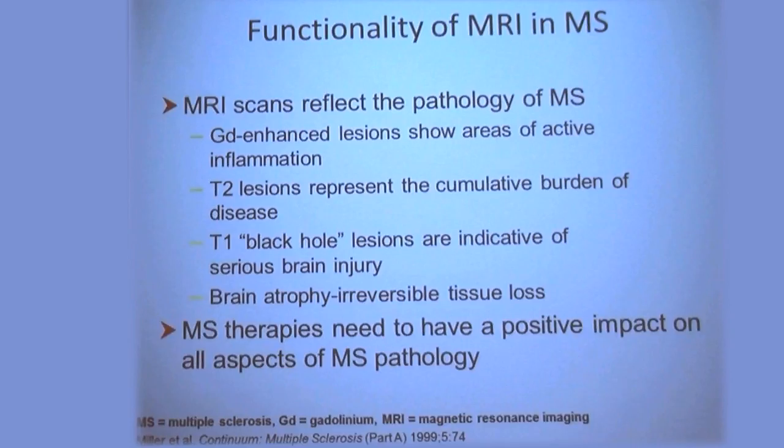Let me start with the GAD enhancing lesions — that's the very first thing that shows up when there's an MS attack. Normally the seal between the blood vessel and the brain is watertight; even water molecules can't pass back and forth. But the very first thing that happens with an MS attack is that barrier between the veins and the brain becomes porous.